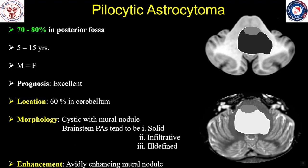Pilocytic astrocytomas are the most common pediatric brain tumors, constituting about 70–80% of posterior fossa neoplasms, of which about 60% are located in the cerebellum. These are encountered in children between 5–15 years of age with equal incidence in boys and girls. They are grade 1 neoplasms with excellent prognosis and a median overall survival exceeding 90% at 10 years. Classically, cerebellar lesions are cystic with a mural nodule showing avid post-contrast enhancement, while brainstem pilocytic astrocytomas tend to be solid, infiltrative, and have ill-defined margins.